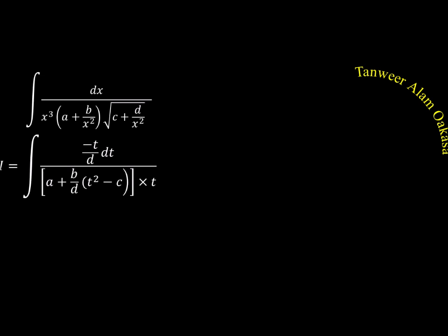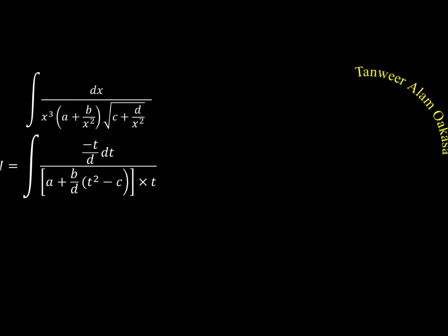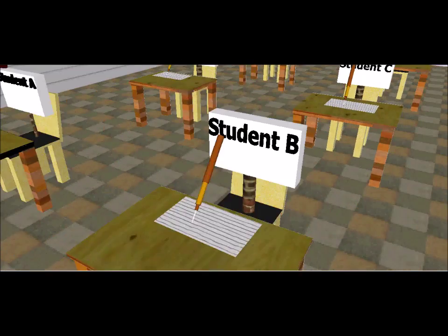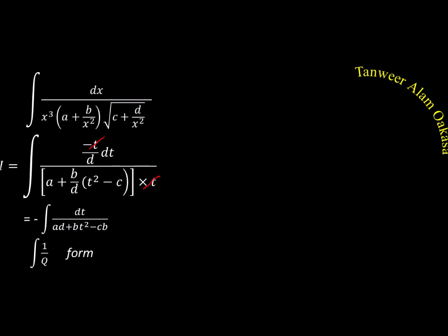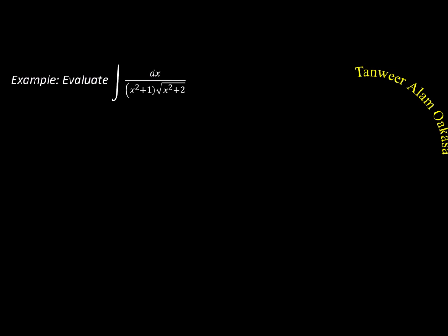After substituting all values, the integral reduces to a 1/Q form in T — specifically something like 1/(aD + bT² − c). Integrating a 1/Q form gives either tan inverse or log, depending on the sign. So this special form is ultimately solved by the standard 1/Q integration formula.